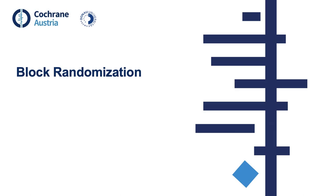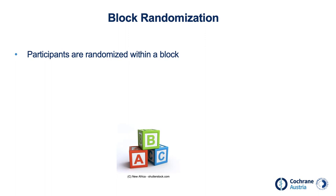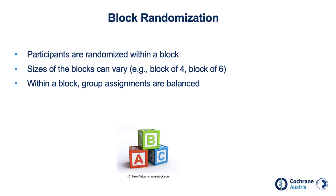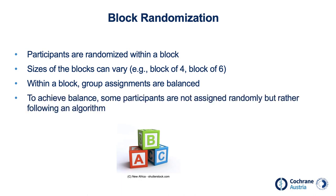Let's start with a closer look at block randomization. The basic principle of block randomization is that participants are randomized within groups called blocks. Block sizes can vary — for example, we could use blocks of 4, 6, or 8 participants. Within a block, group assignments are always balanced. However, to achieve this balance, some participants are not assigned randomly but rather assigned following an algorithm.